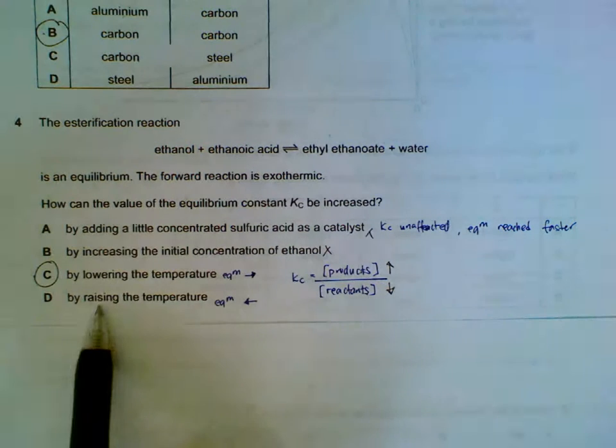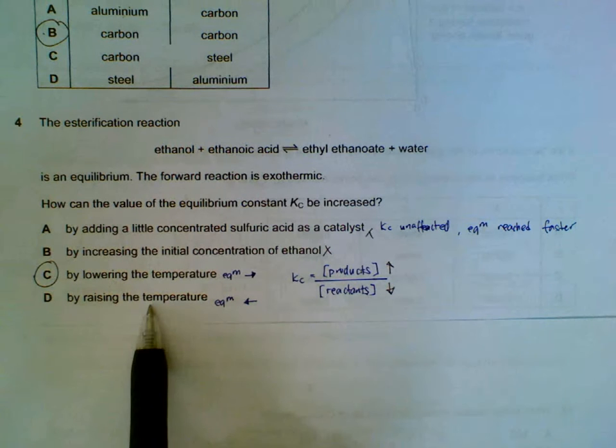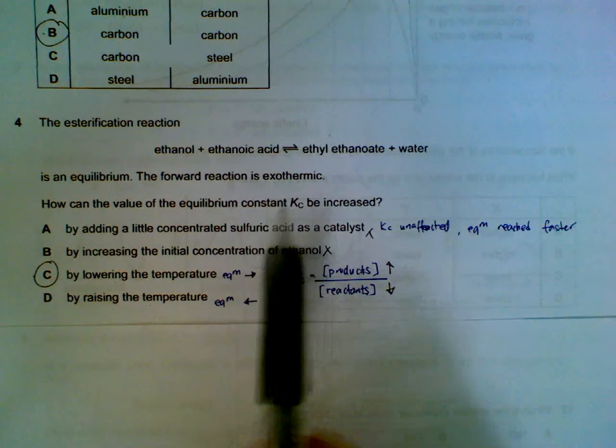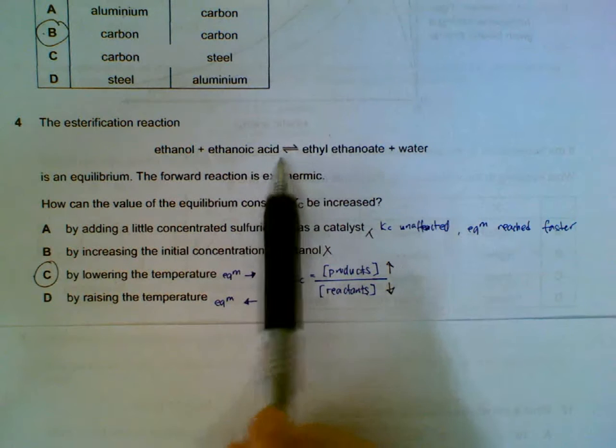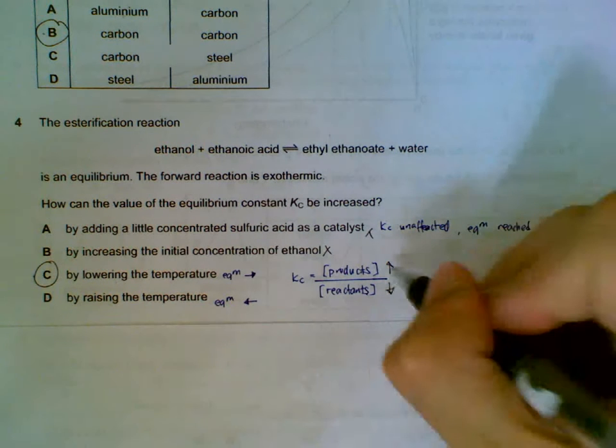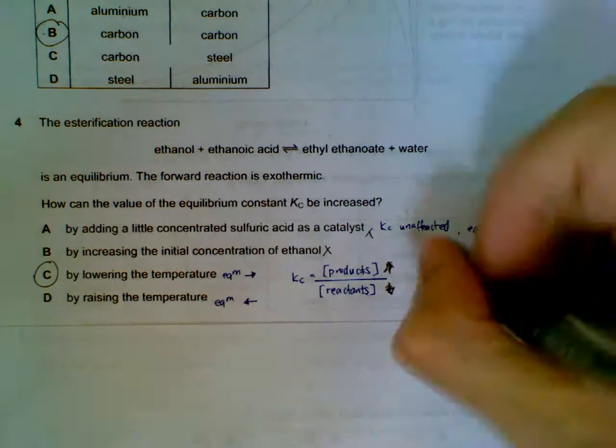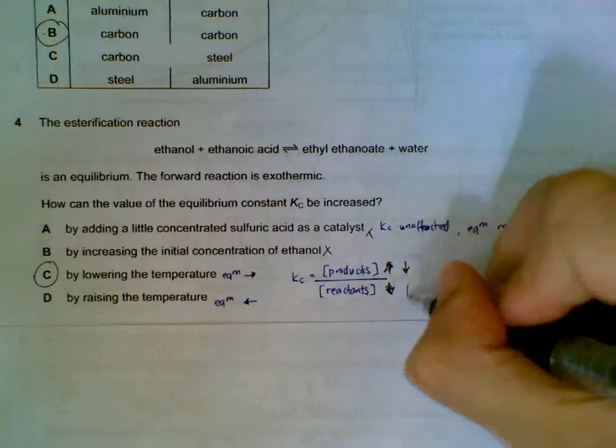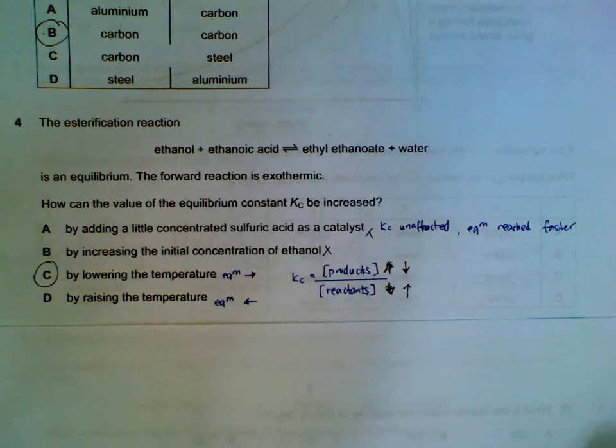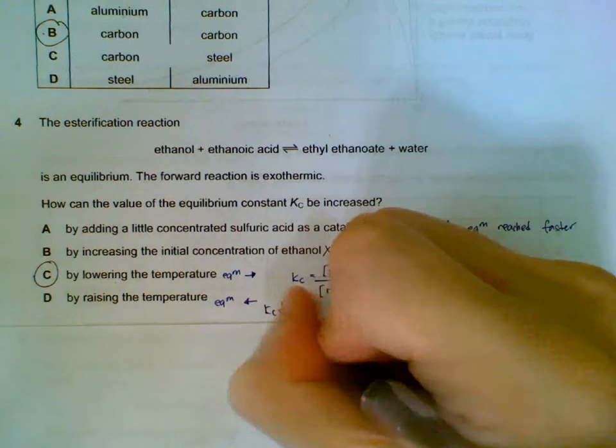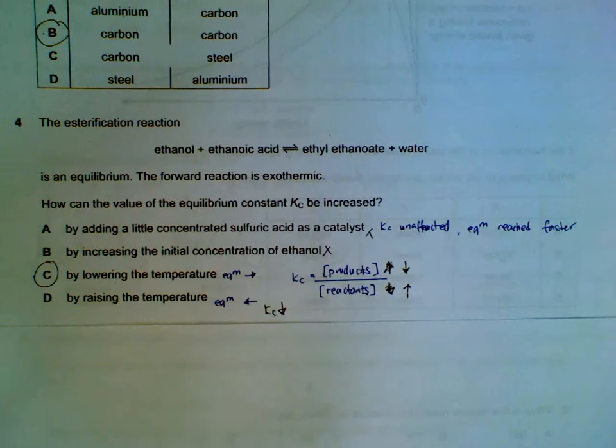If you check option D, raising the temperature, the equilibrium will shift towards the endothermic direction, which is to the left side. So what happens for option D is the products will decrease, your reactants will increase, your Kc will actually decrease for option D, which is not what we want.